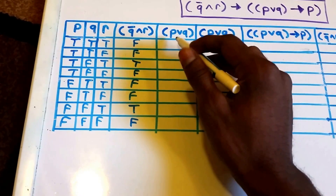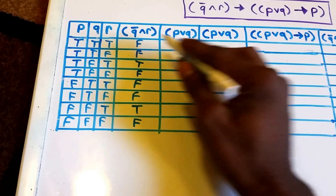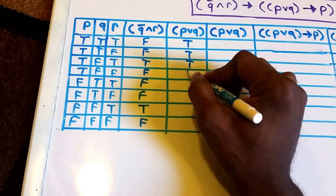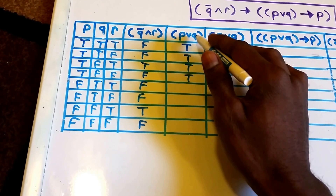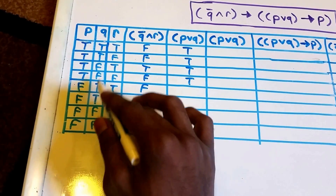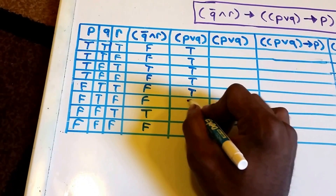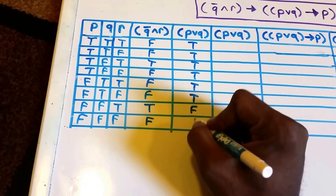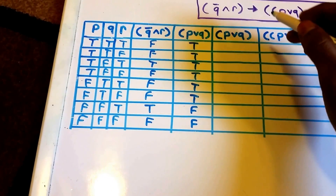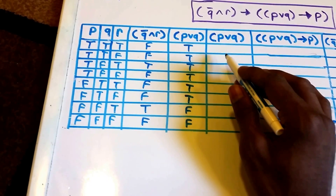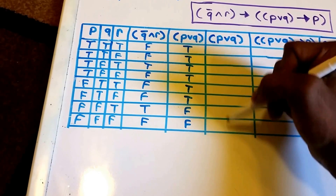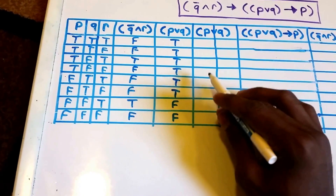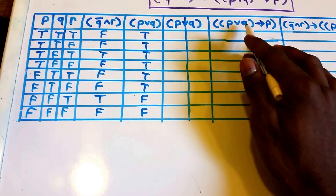Next is the 'p or q' column. Anytime p or q is true the overall expression is true. The first four rows have p as true, so those are all true. Then we look for rows where q is true — those are also true. The remaining rows are false OR false, giving false. I accidentally put this column in twice, so I'll cross out that duplicate column.